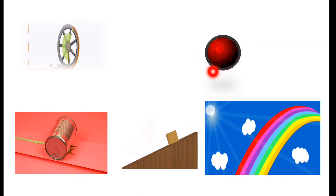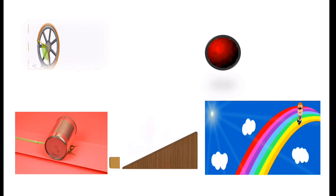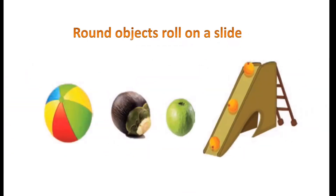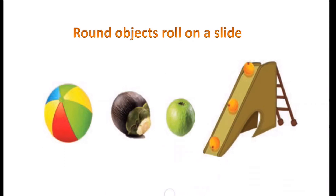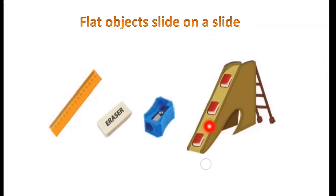Now let us look at some more examples. Round objects roll on a slide. You can see these objects are round — they have a curved surface, so these objects will roll on a slide. Flat objects slide on a slide. Look at these examples — they all have a flat surface.